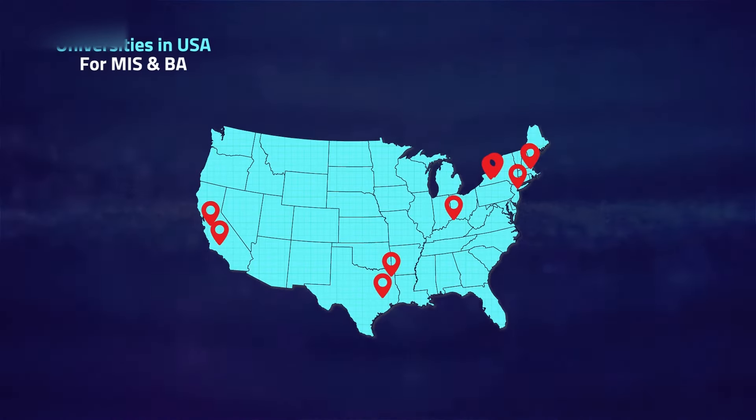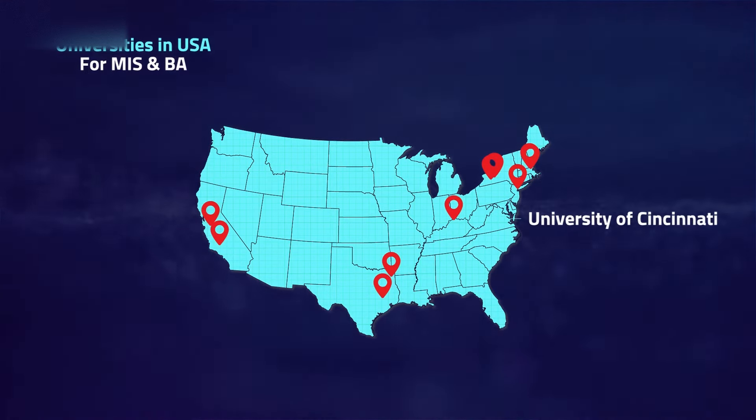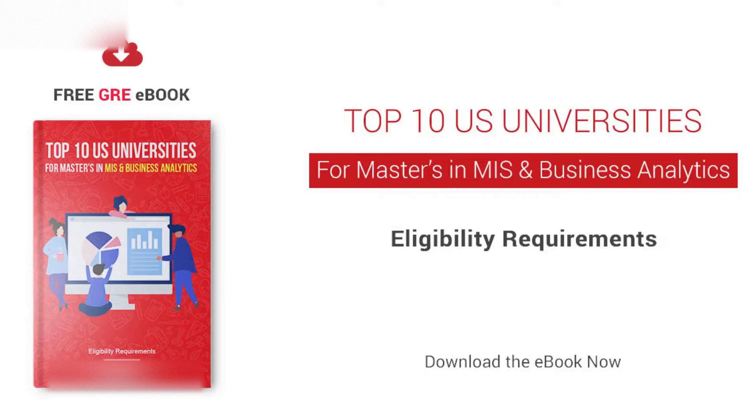Now let's understand the top universities you should be looking into for your master's. Some of the top universities include Carnegie Mellon University, Texas A&M University, University of Texas Dallas, University of Cincinnati, University of Southern California, and many more. We've compiled the full list of universities along with GRE score requirements in a separate eBook available in the description. Do keep in mind these universities expect a very good GRE Quant score, a TOEFL score of 90 and above, and work experience is usually recommended for MIS and Business Analytics programs.